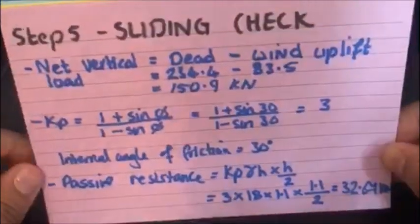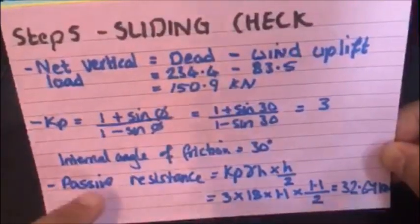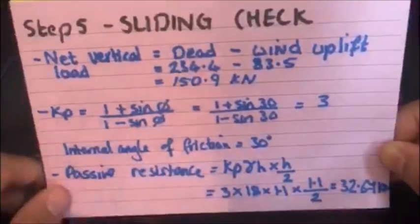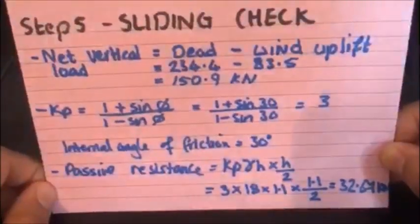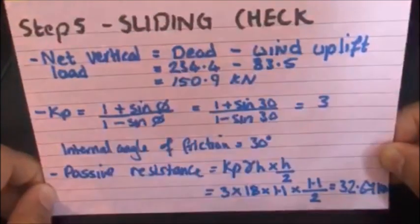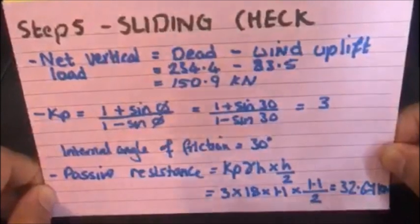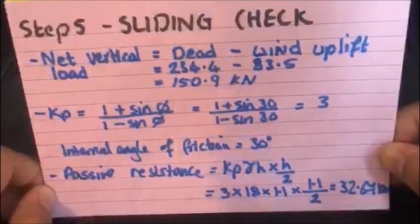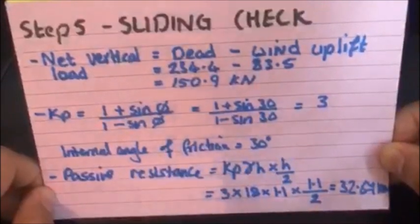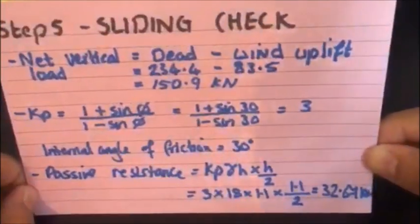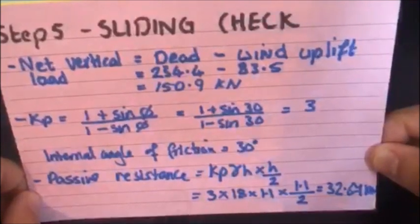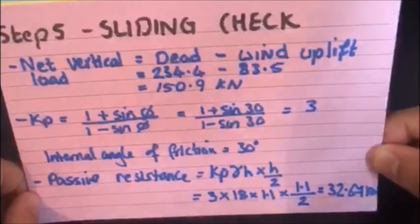And then the next thing to do is to calculate the passive resistance, which is this formula here. So it's kp times density times the height times the height over 2. The h over 2 accounts for the triangular distribution of the passive resistance acting on the pad foundation.